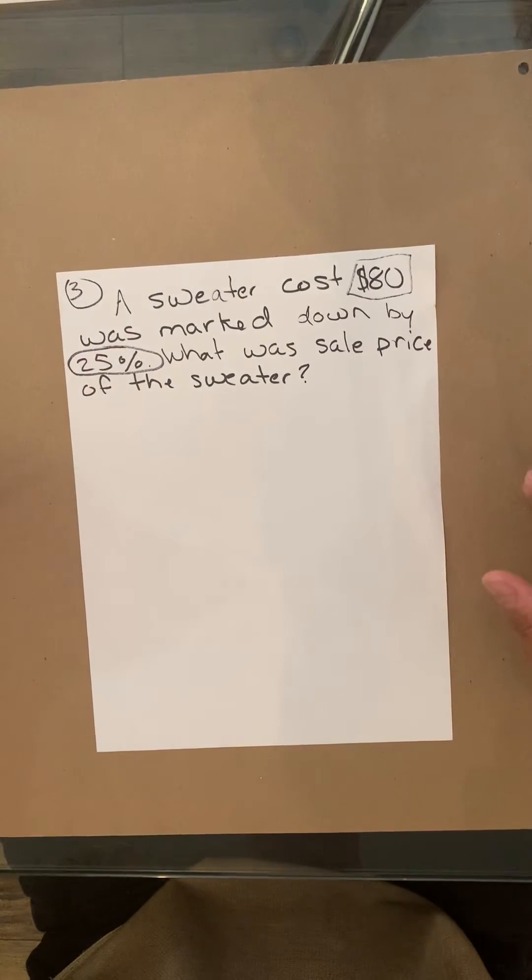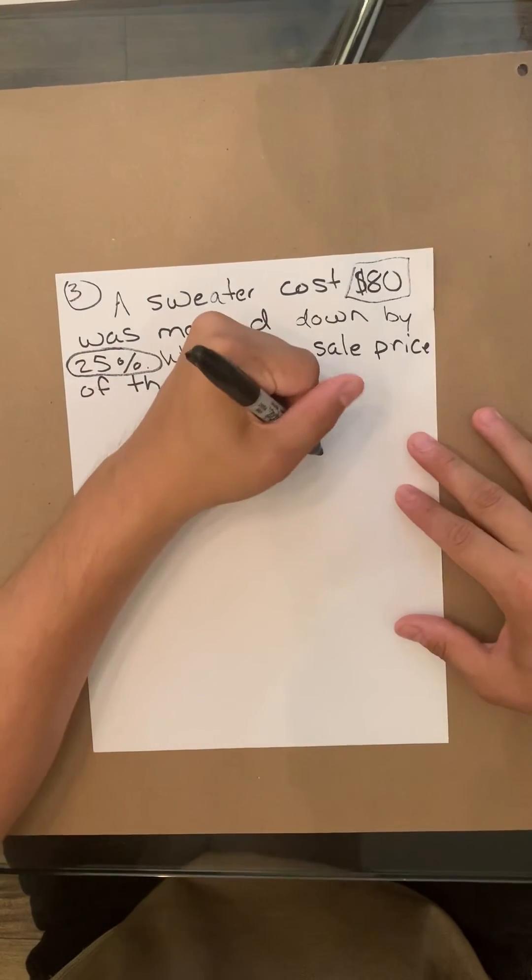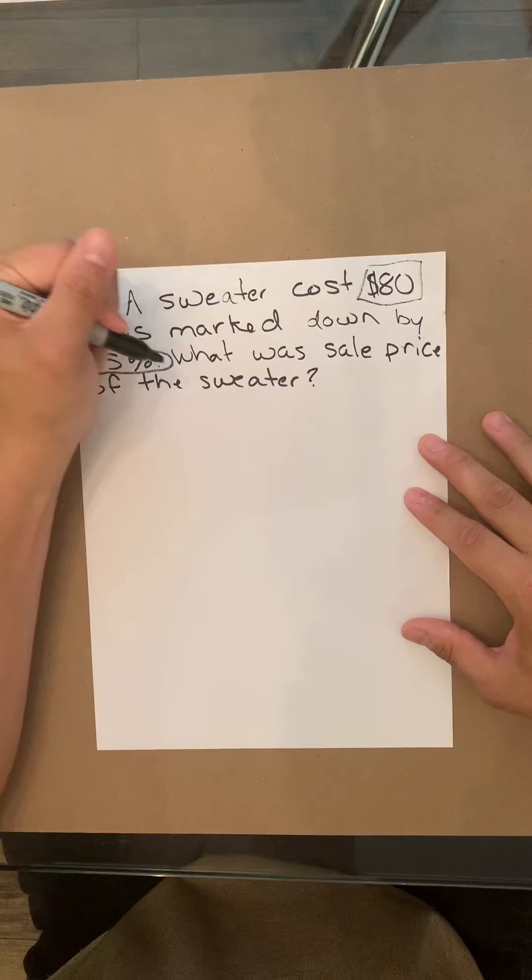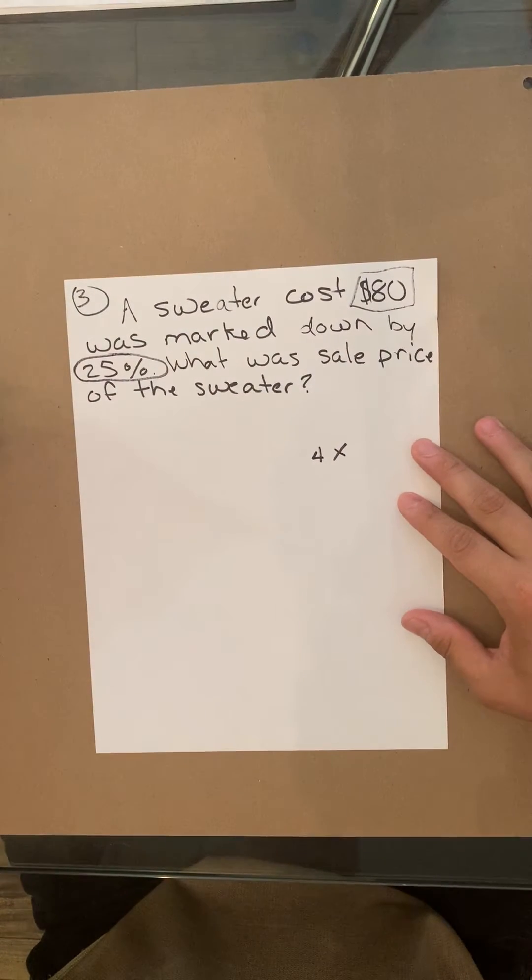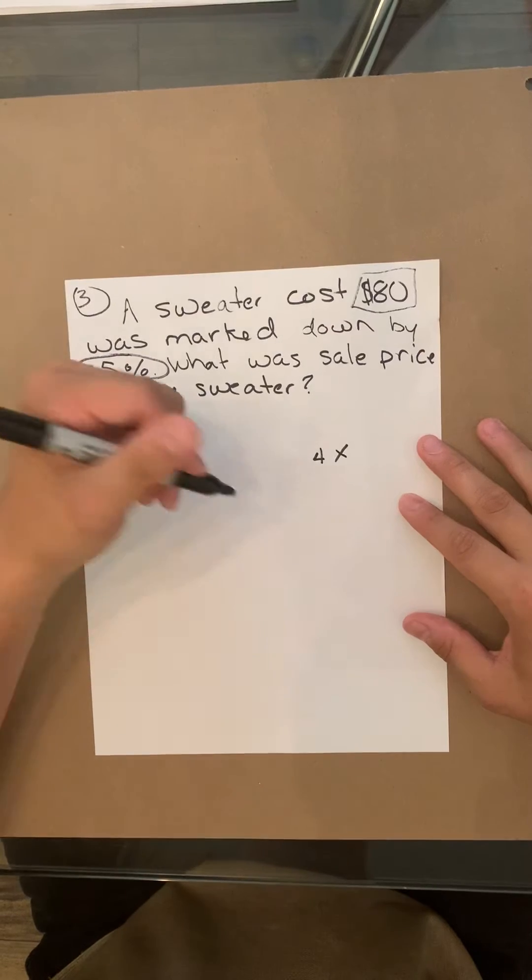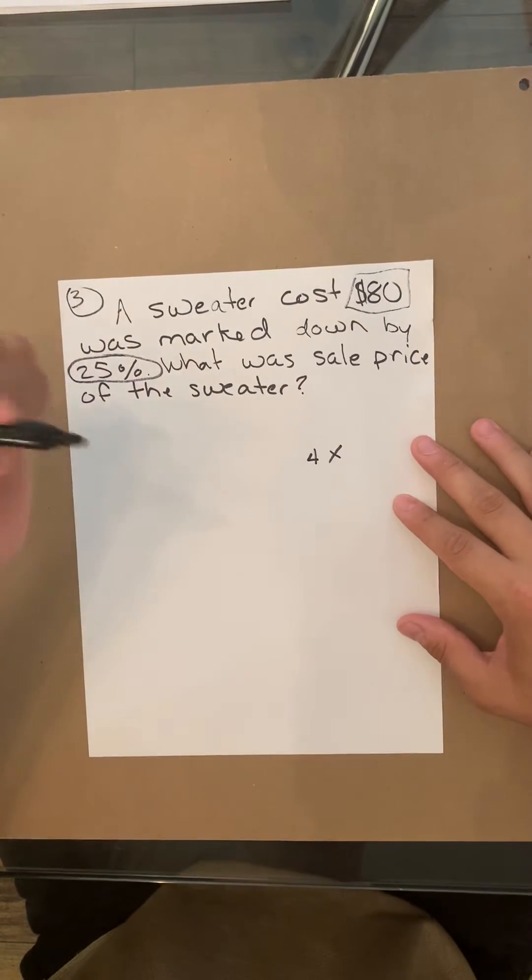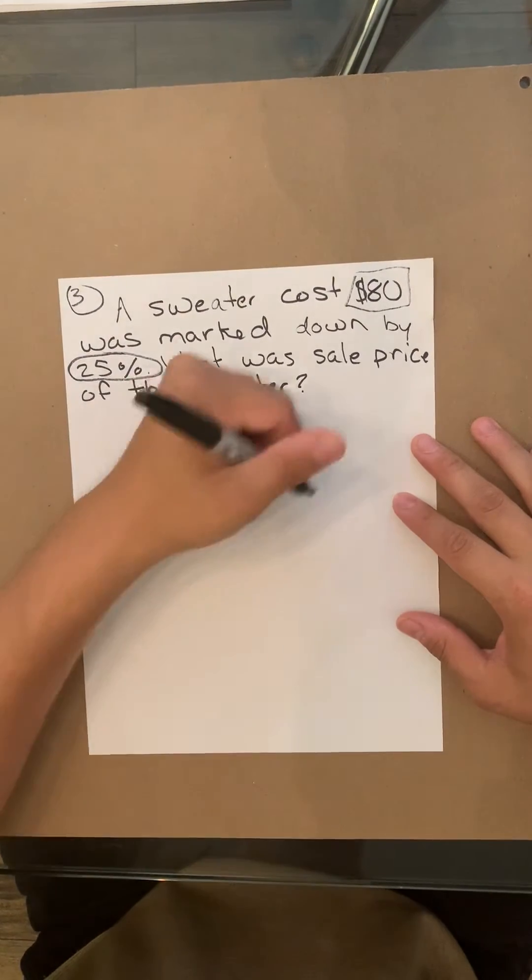If the number can divide into itself four times, think of it as the equivalent of a dollar. Four quarters equals $1, each quarter equals 25%. So if it can divide into itself four times, that will be 25%.